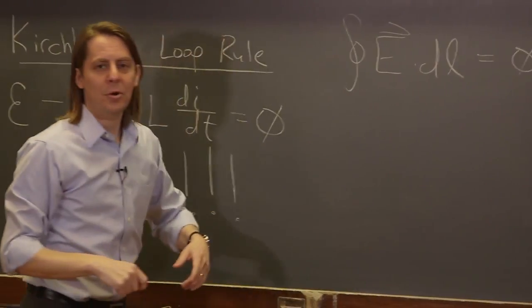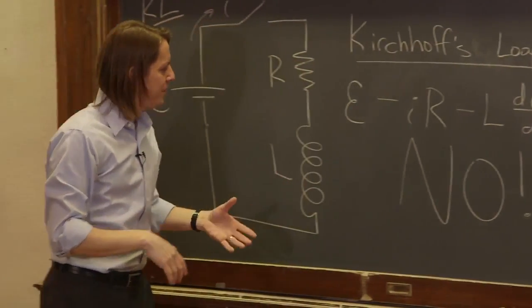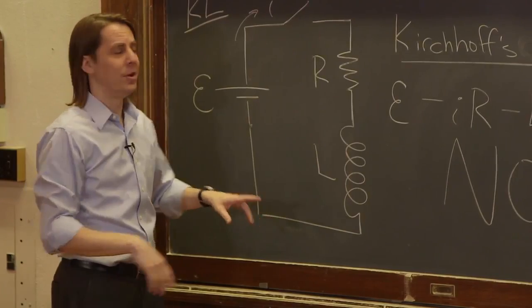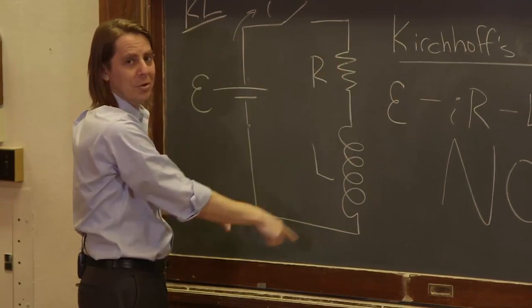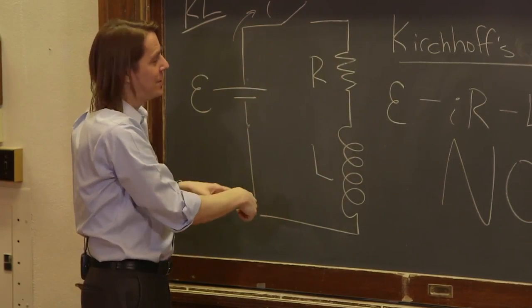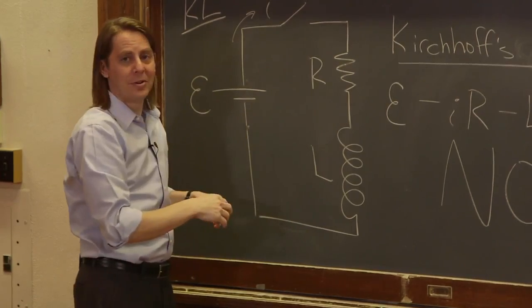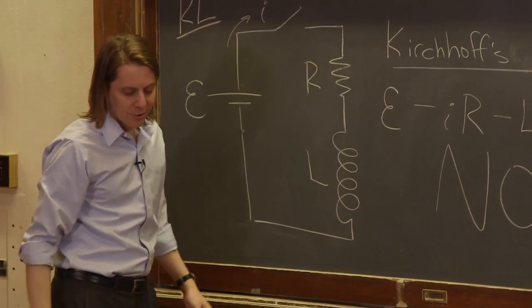However, this is not true when you have currents changing in time, especially when you have inductors. And you always have a little bit of inductance. Right? The circuit itself is a loop. So really, any time the current changes, you're going to have some inductance. Now you have a much bigger inductance if you actually put an inductor there.